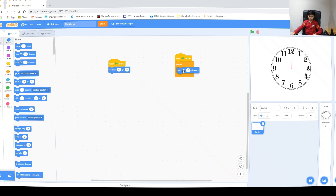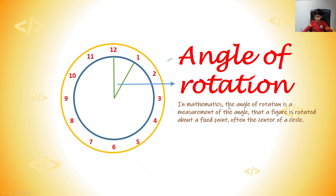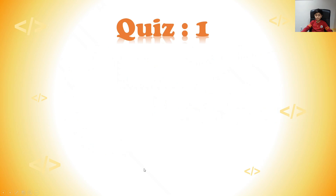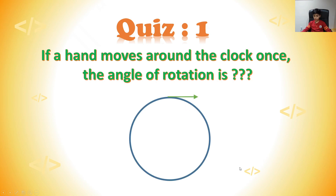Let's switch to my PowerPoint. We need this clock hand to move from 12 to 1 to 2 to 3 and so on — that's called circular motion. To make circular motion work, you need the angle of rotation. In mathematics, the angle of rotation is a measurement of the angle that a figure is rotated about a fixed point — in this case, the center of our clock. Quiz: if a hand moves around the clock once, what is the angle of rotation? Five, four, three, two, one — it's 360 degrees, because a circle is 360 degrees.